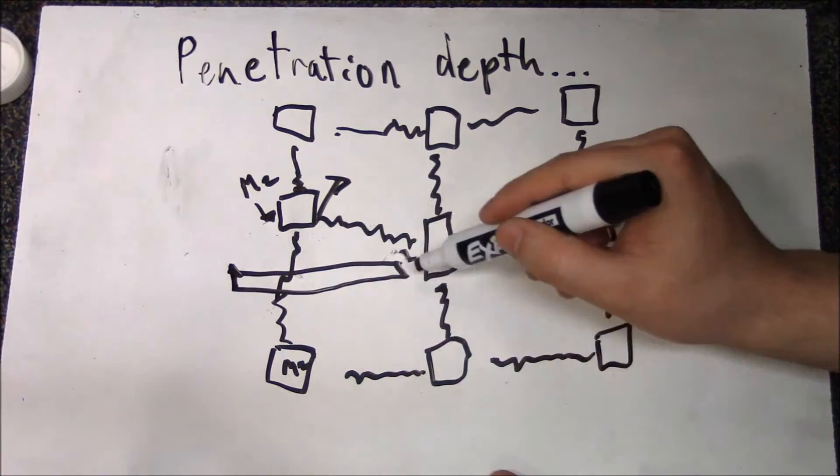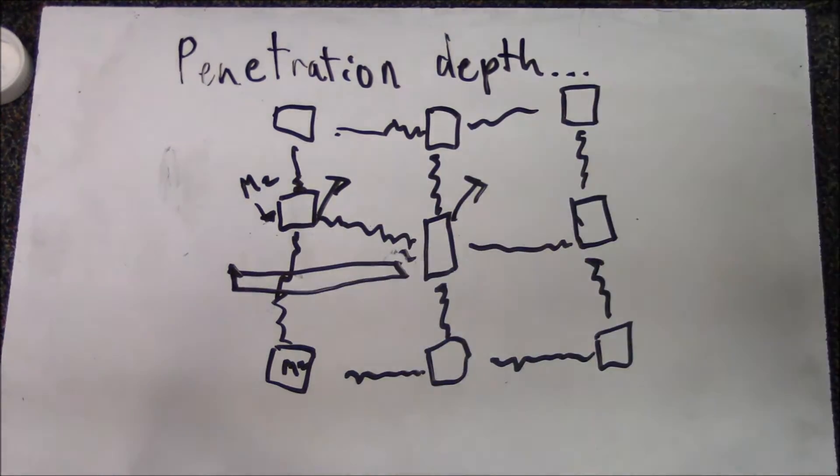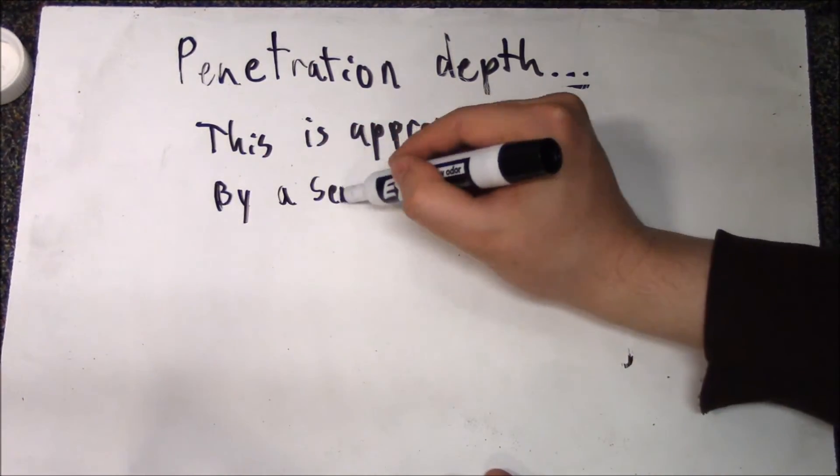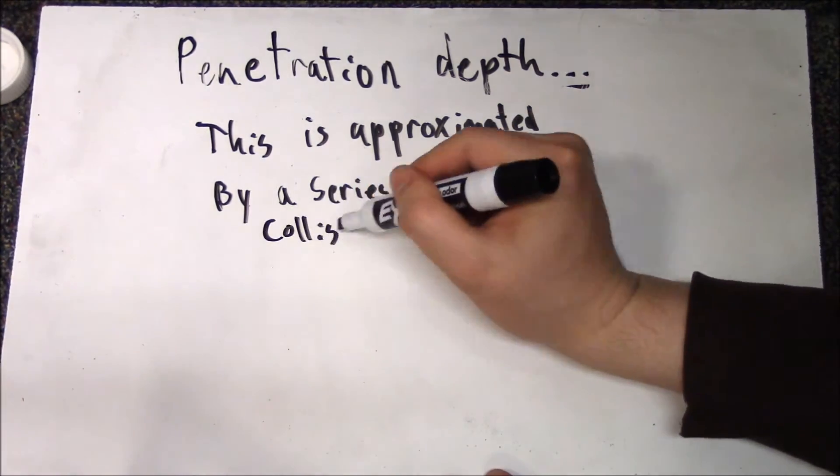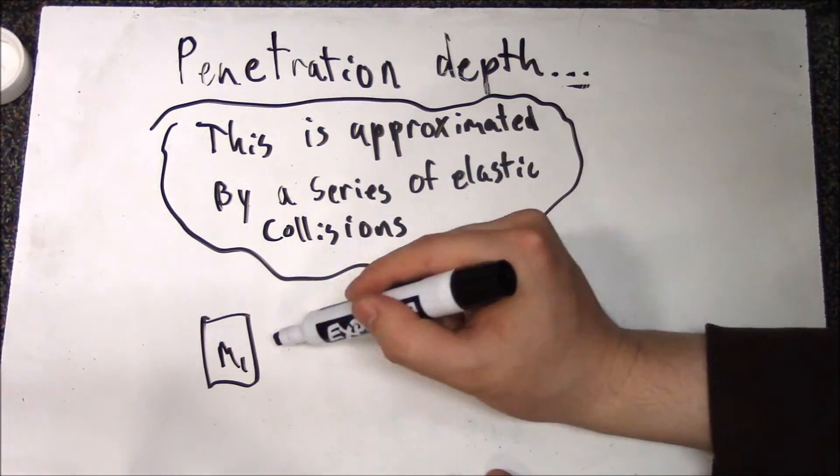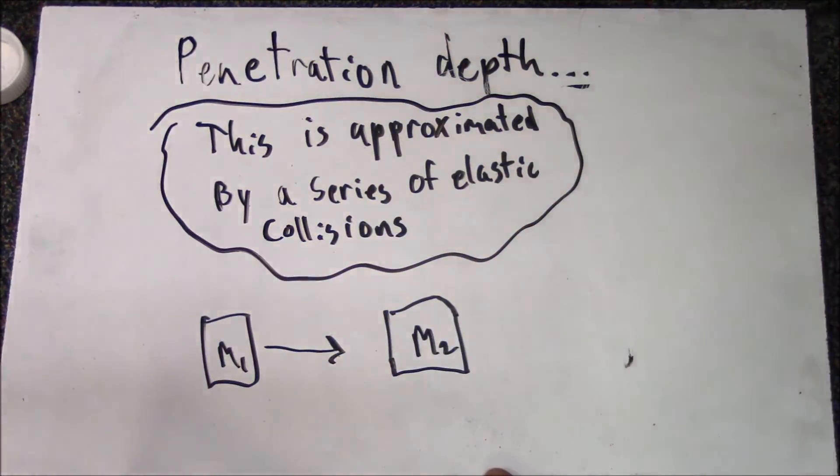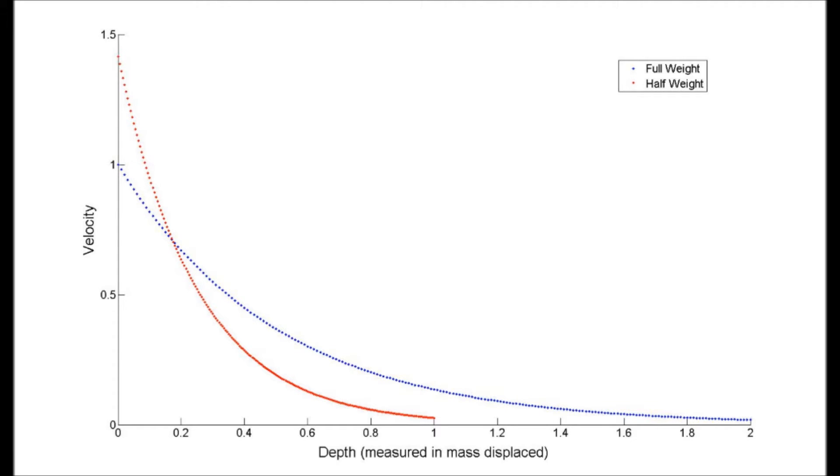It will then hit another weight, and the process will repeat itself many times. This can be simplified further by ignoring the side components and doing a series of 1D elastic collisions. Simulating two arrows of equal energy, we find that the lighter one slows much more quickly than the heavy one.